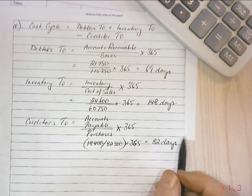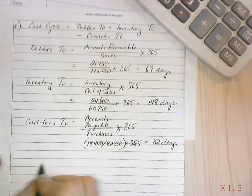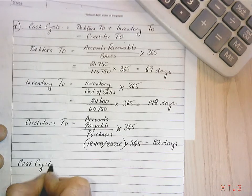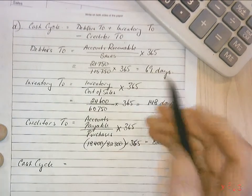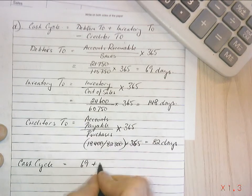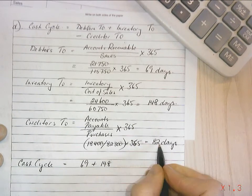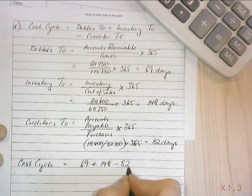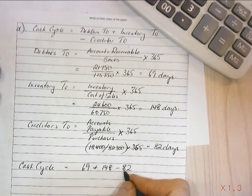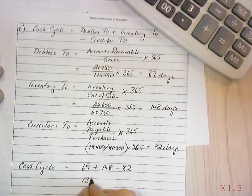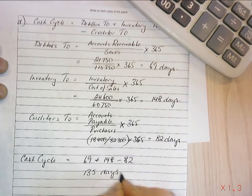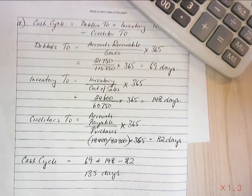So now my formula: equals 69 days, plus 148 days, minus 82 days — equals 135 days.